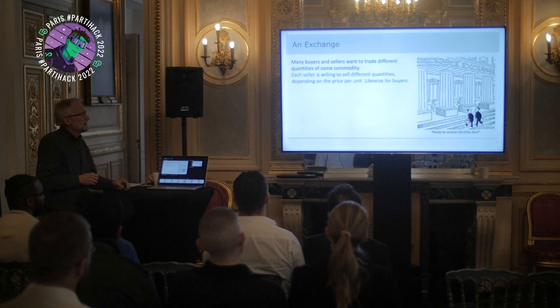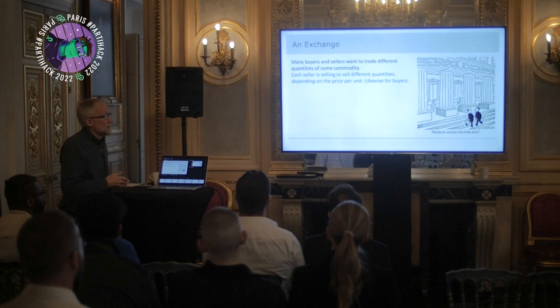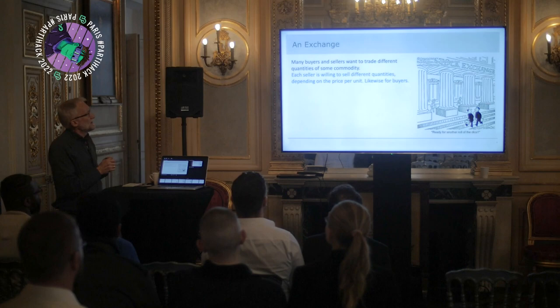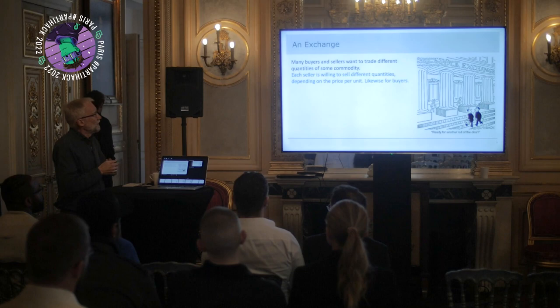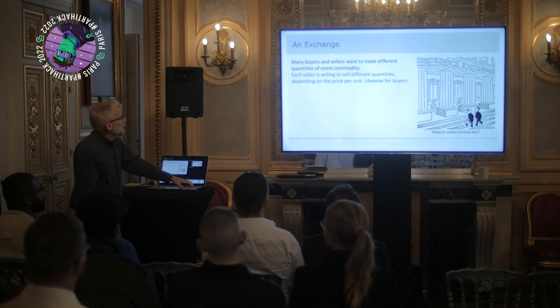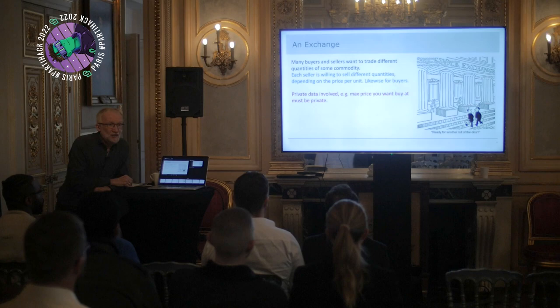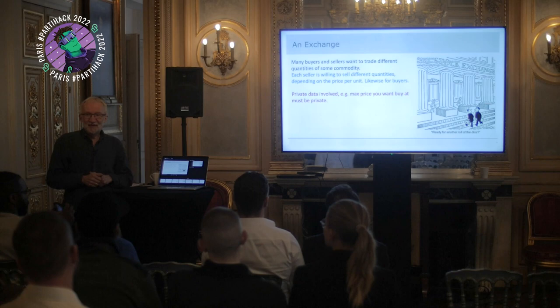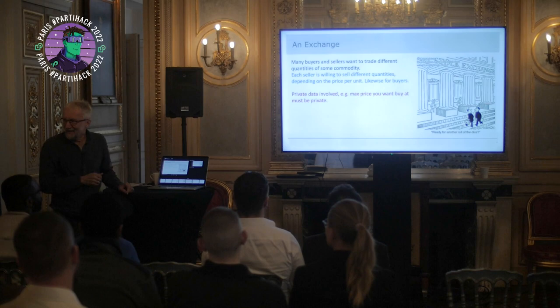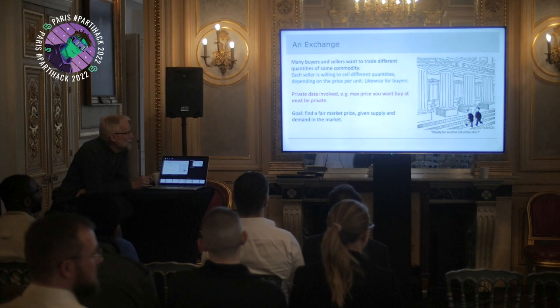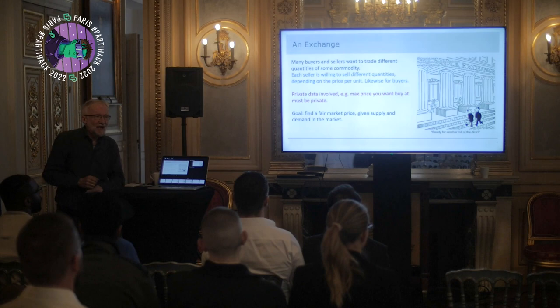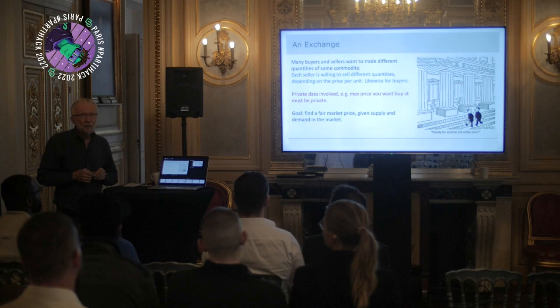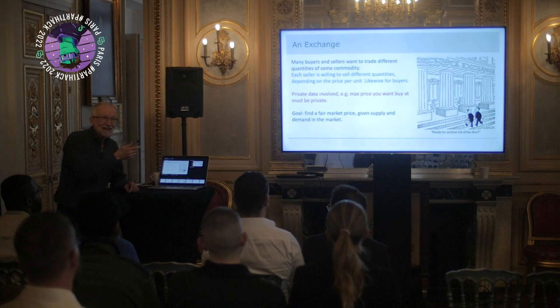Then we have an exchange. Let's say there are many buyers and many sellers trading some commodity — oil, gold, stock, or whatever. All the sellers are willing to sell different quantities depending on the price; probably the greater the price, the more you want to sell. Likewise for buyers, but with the opposite inclination. There's also private data here, like the maximum price you want to buy at. Because if you just announce, I'm going to pay a thousand dollars per ton, that's my maximum — what are all the sellers going to say? They'll say, what a coincidence, that's exactly the price. So the goal is to find a fair market price given the supply and demand — what economists call the market clearing price.